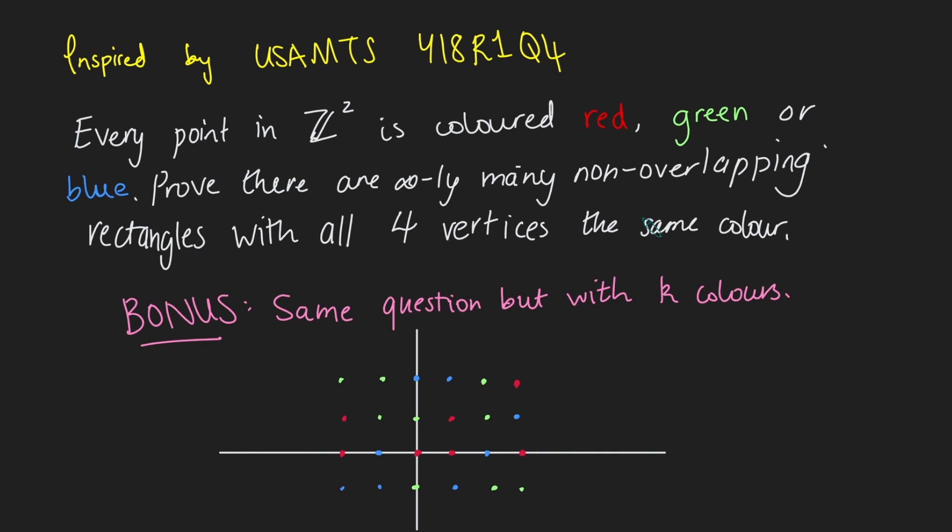Hi, thanks for joining me. Today I've got a really interesting problem to do with colouring lattice points on the plane with a really nice solution. This problem was inspired by the USA MTS year 18 round one problem four. The USA MTS stands for the USA Mathematical Talent Search. I think it's a really interesting problem with a really nice solution — there are actually quite a few solutions, but the one I'll show is very elegant.